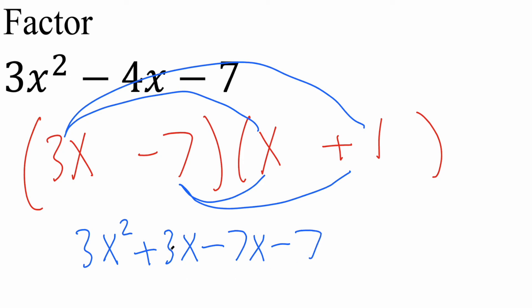And if you combine 3x minus 7x, you in fact get negative 4x. And again, 3x squared is 3x squared, negative 7 is negative 7. And that's pretty much it for this problem.